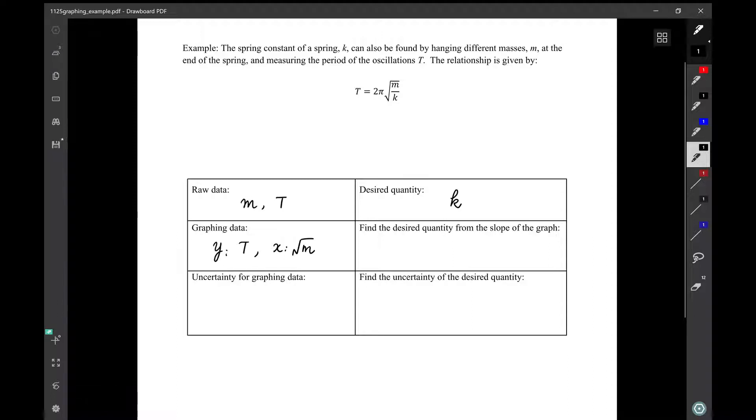So how are we going to find k from the slope? They are not directly equal. So we should look back at the equation. So we plot T on the y-axis and we plot square root of m on the x-axis. So what's left here is y over x, or the slope. So we can write down slope equals 2π over square root of k.